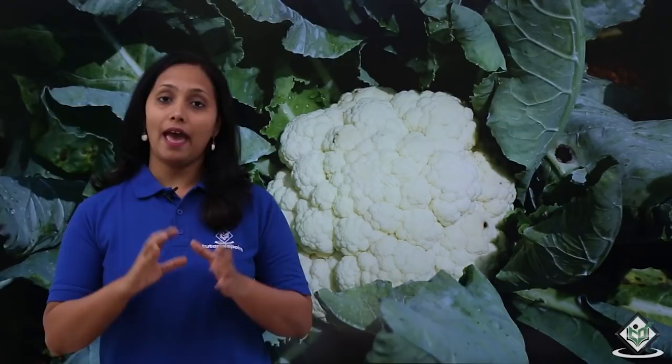Welcome to Tutorials Point. In this tutorial we will talk about the cultivation process of cauliflower crop. Cauliflower has different names in different languages. In Hindi it is popularly called Gobi. The scientific name of cauliflower is Brassica oleracea variety botrytis and the crop belongs to the family Brassicaceae.